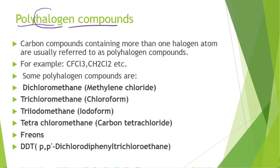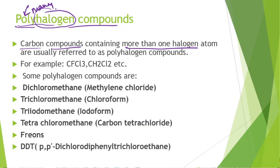Polyhalogen compounds are carbon compounds containing more than one halogen atom. 'Poly' means many, so where more than one halogen atom is present in a carbon compound, it is called a polyhalogen compound. Examples include CFCl₃ and CH₂Cl₂.